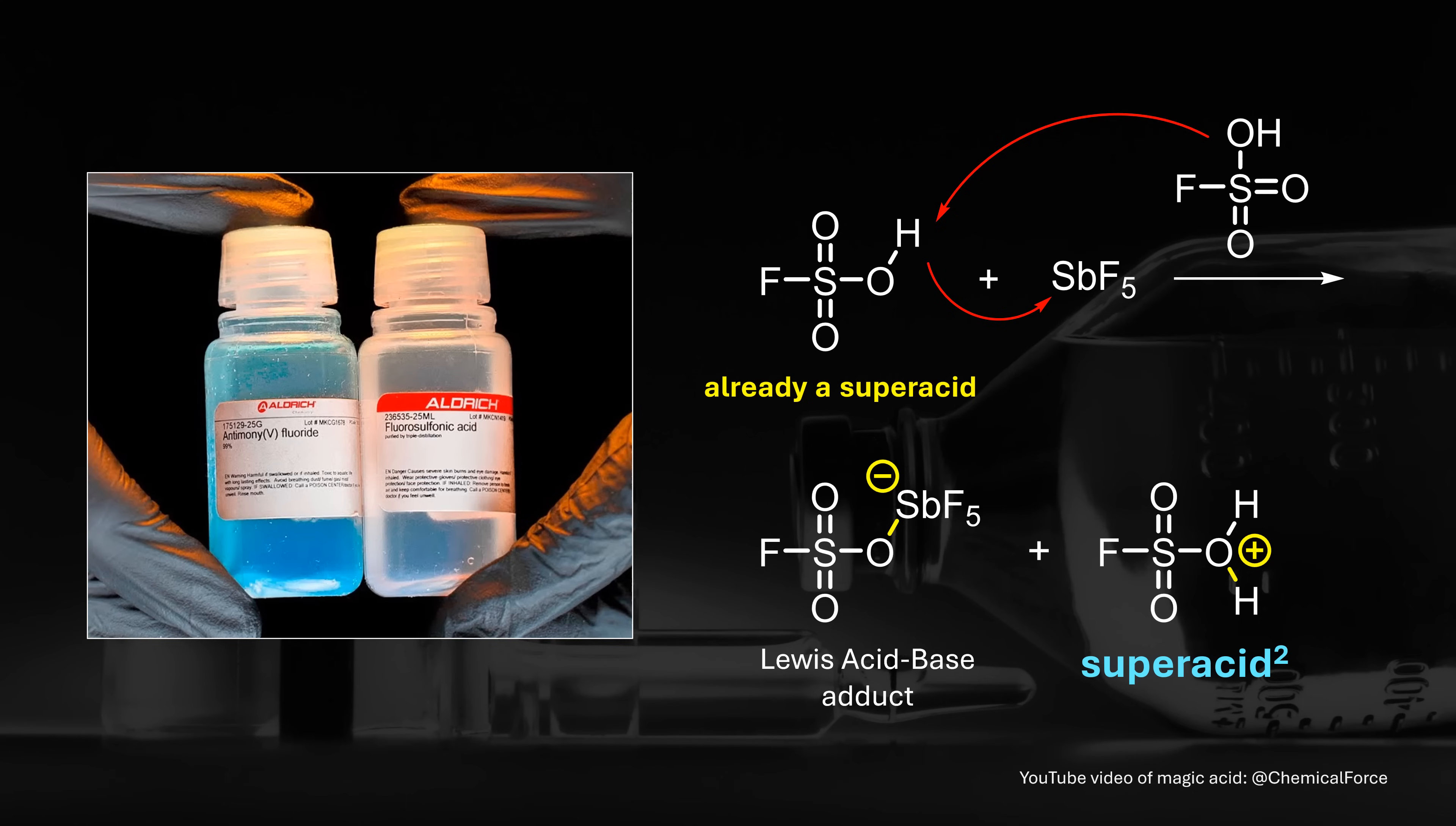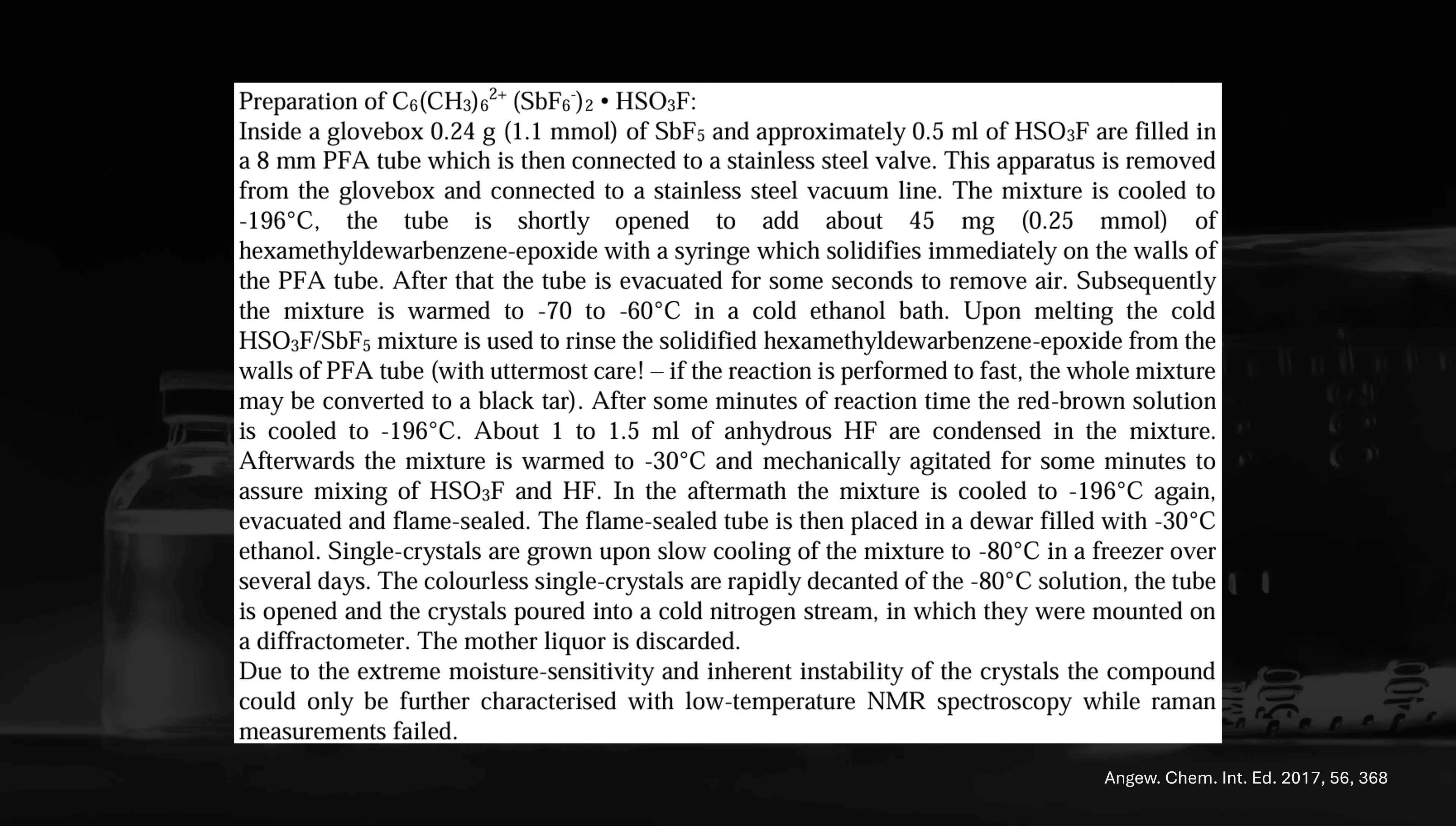If you've seen any videos on magic acid, you will not be surprised that the experimental procedure looks quite wild. The reaction is performed at extremely low temperatures given the dication instability and requires masterful rinsing of frozen Dewar benzene epoxide with the superacid mixture. If you swirl too fast, whatever that means, your precious reactants will turn into black tar.